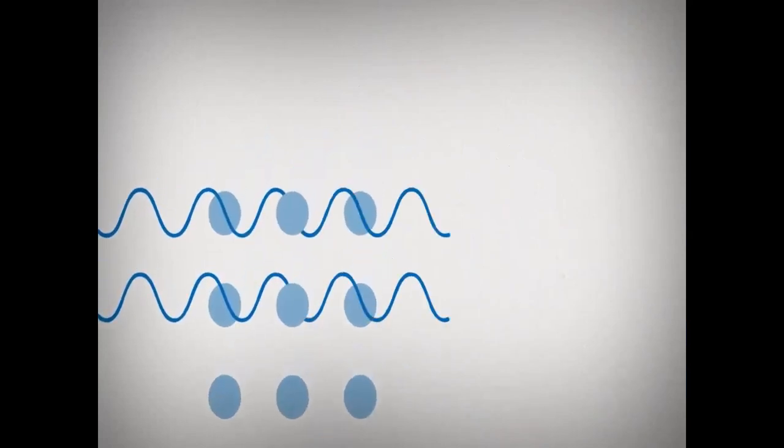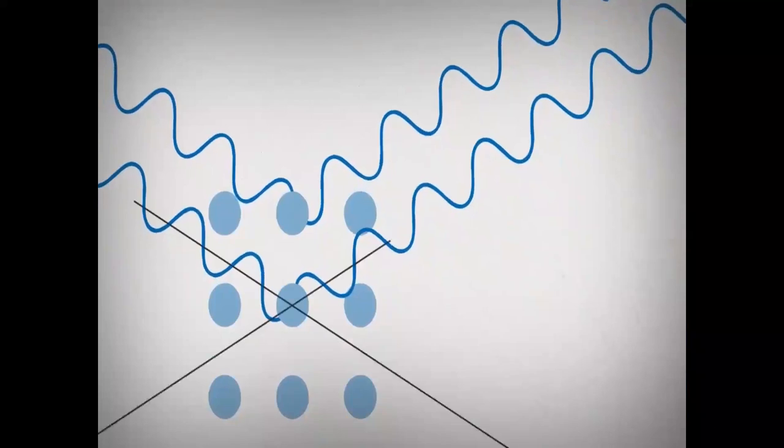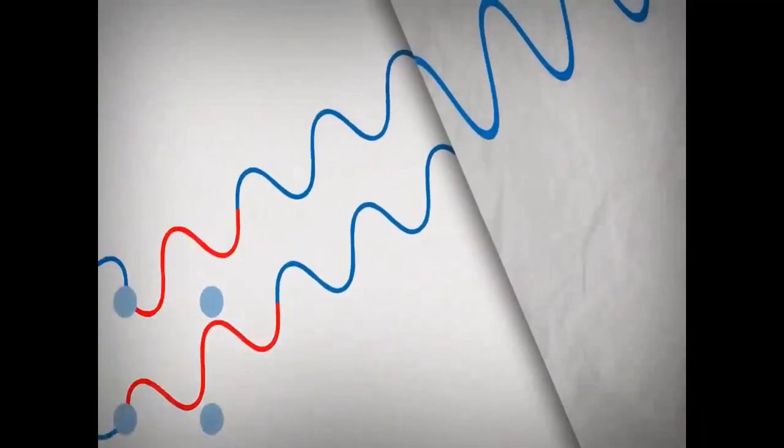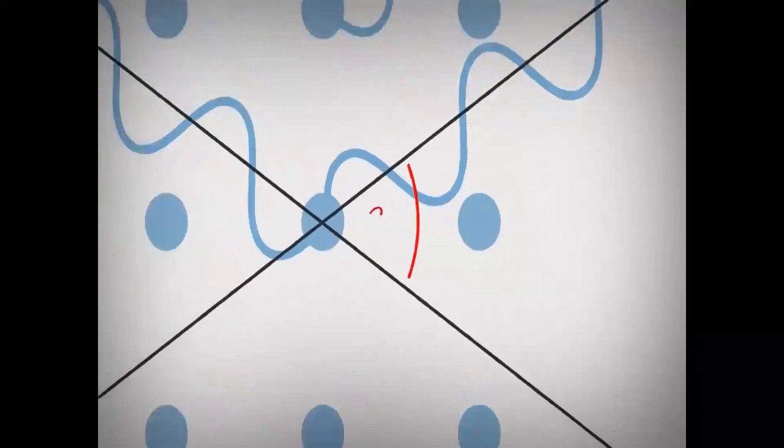In a crystal, the repeating arrangement of atoms form distinct planes separated by well-defined distances. When the atomic planes are exposed to an X-ray beam, X-rays are scattered by the regularly spaced atoms. Strong amplification of the emitted signal occurs at very specific angles where the scattered waves constructively interfere. This effect is called diffraction. The angle between the incident and the scattered beam is called two theta.